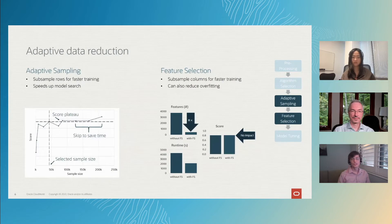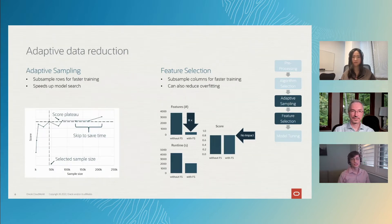We've also done some work to improve the running time through adaptive data reduction. First, we do adaptive sampling, where we're trying to identify the optimal number of rows of your training set that we should use to train our model.